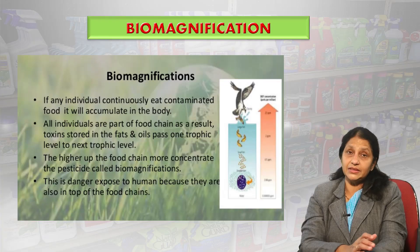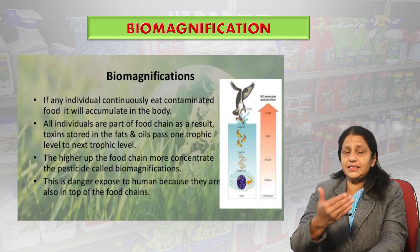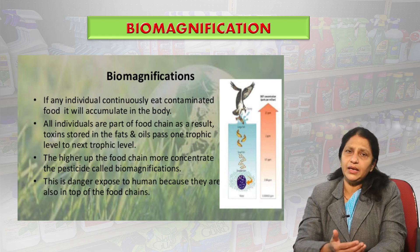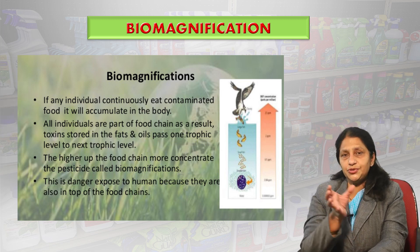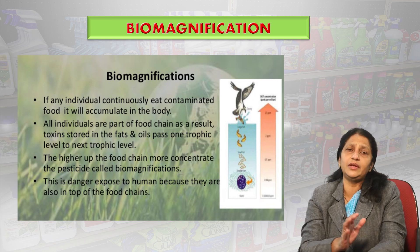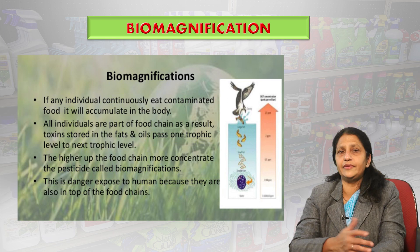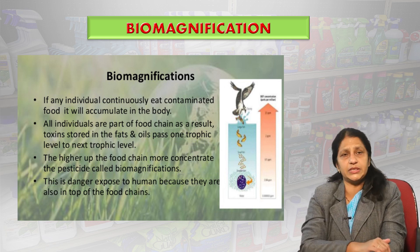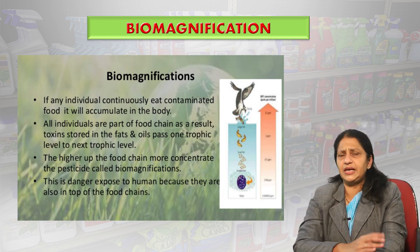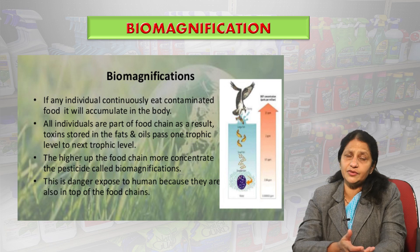Another important factor is biomagnification — the increase in concentration of a pesticide or chemical due to its persistent or non-biodegradable nature in the tissues of organisms at each successive level of the food chain. Organisms at higher levels of the food chain experience greater harm compared to those at lower levels. The extent of biomagnification increases with the persistence and lipophilic characteristics of the particular pesticide.